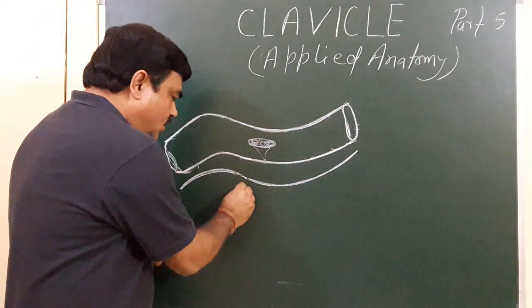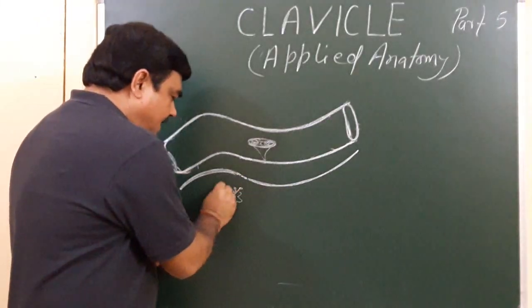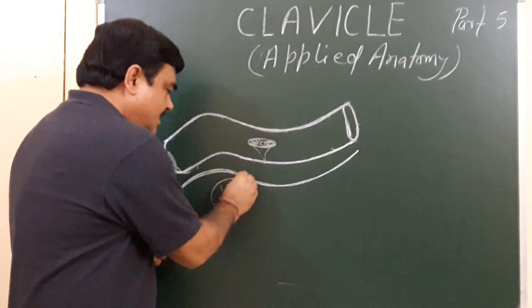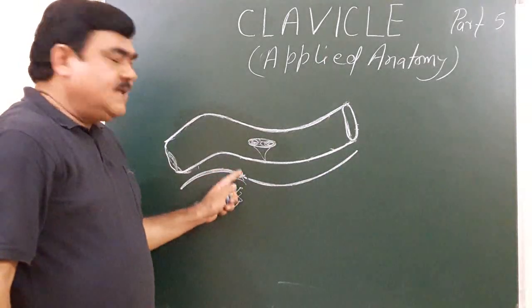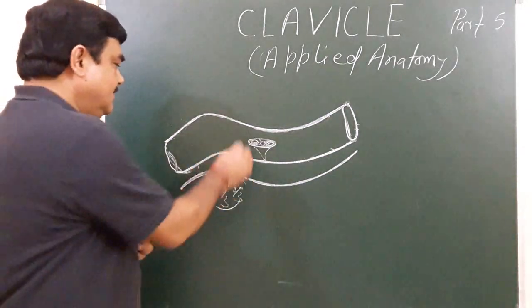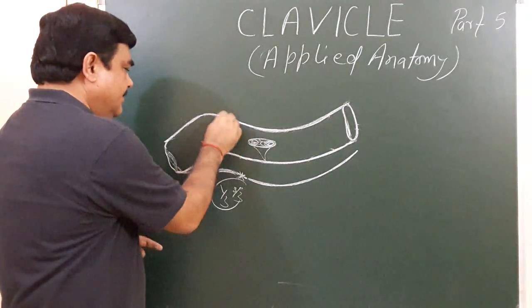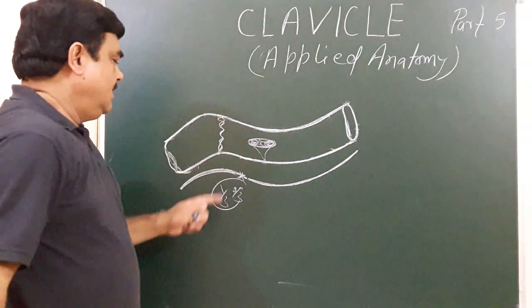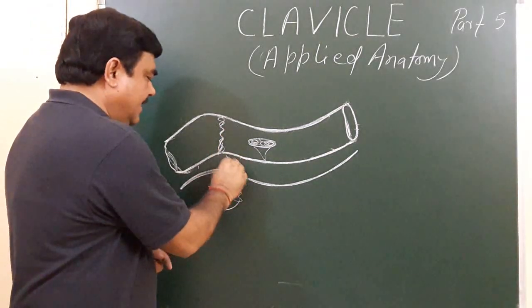This junction of the medial two-third and lateral one-third is the commonest site of fracture of the clavicle. So this part is most commonly fractured — this is the commonest site of fracture of the clavicle.